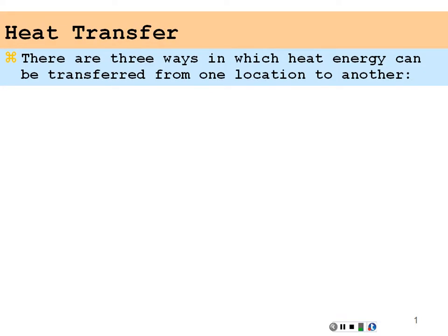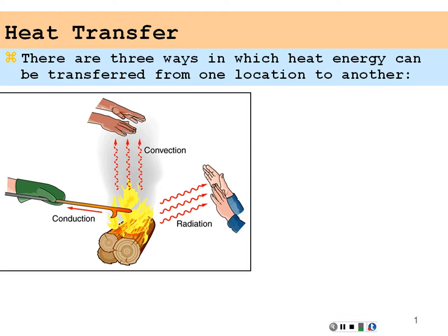This is the third video of Chapter 20, dealing with the kinds of heat transfer that we can have. There are three ways in which heat energy can be transferred from one location to another, and they're all illustrated in this picture here.